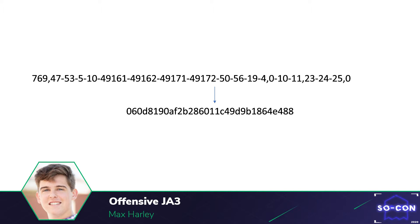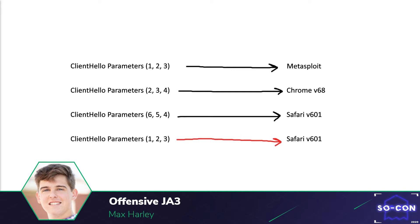You can think of JA3 like a better user agent string, since it identifies the type of client being used and is very difficult to set because it's built into these client HTTP libraries. This is a toy example of how JA3 works as a detection mechanism — if the parameters discussed before were 1, 2, and 3, we could find the user agent that matches those parameters and be fairly sure that the real type of client is Metasploit.